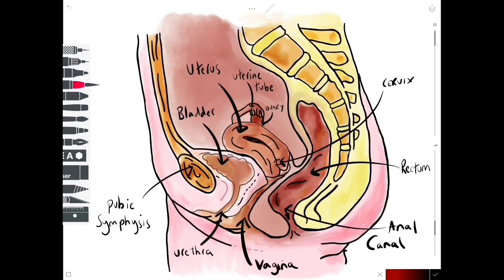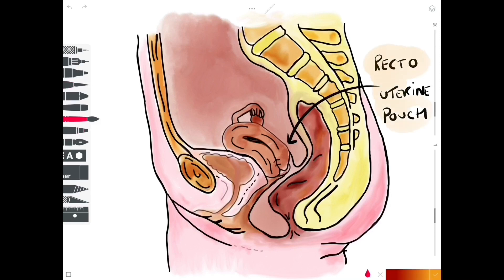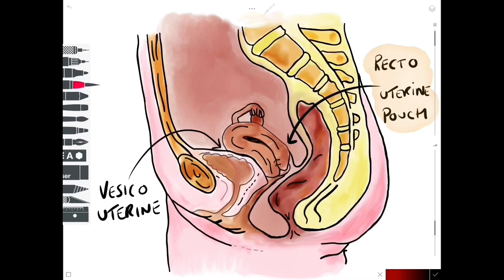Before we move on and talk about the afferent nerve flow, let's quickly mention some of the key recesses here. There are actually two, one of which is clinically important. The posterior recess is the recto-uterine pouch, often referred to as the pouch of Douglas — a deep recess that sits between the uterus and the rectum. The less clinically important recess is the vesico-uterine pouch, which sits between the bladder and the uterus.